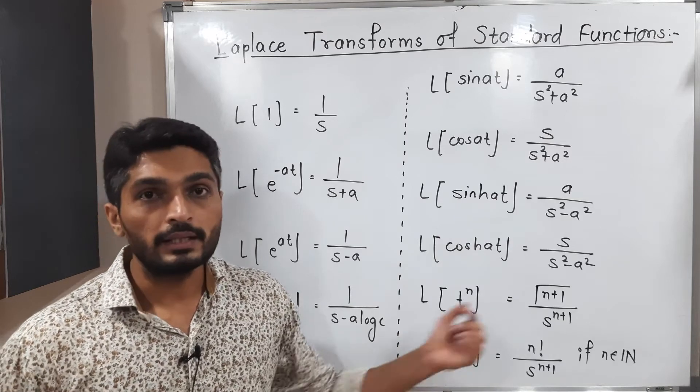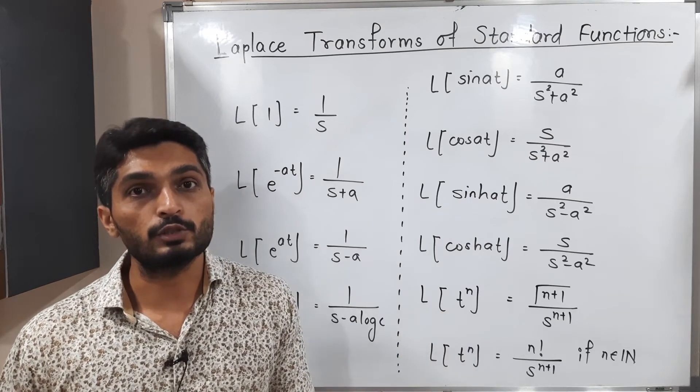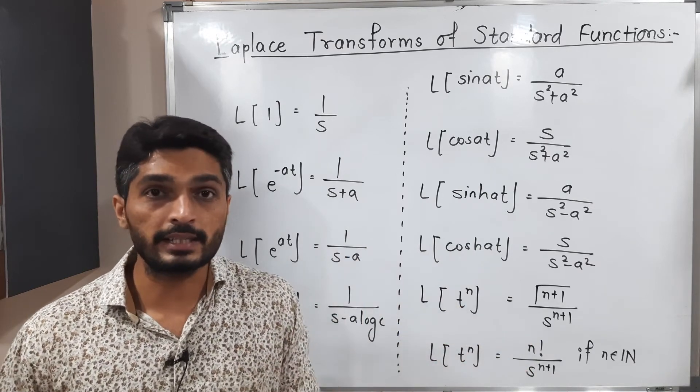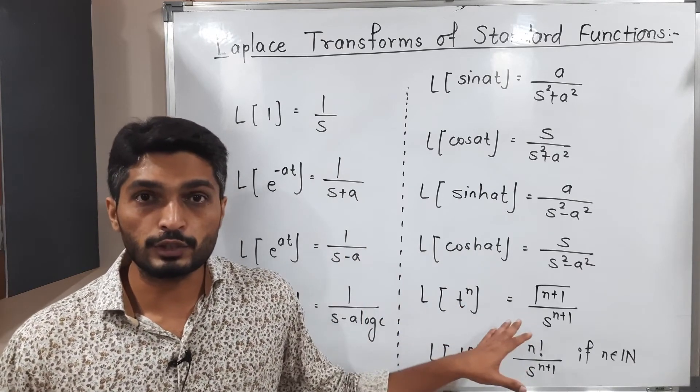Next one is Laplace of t^n is Γ(n+1)/s^(n+1). So this is the formula when you have t raised to any power n, n is any integer, so we have to use this formula.